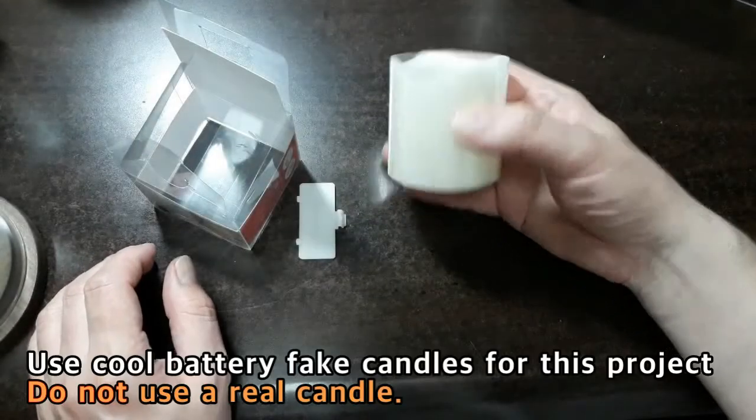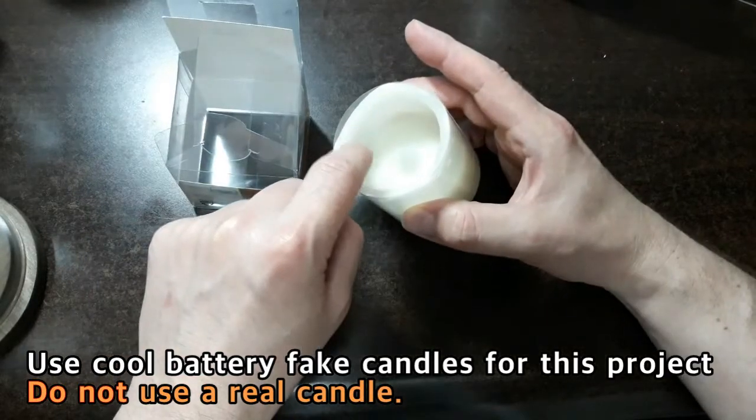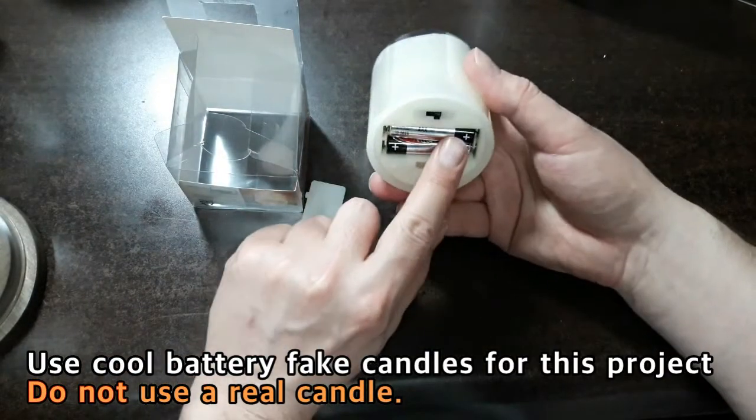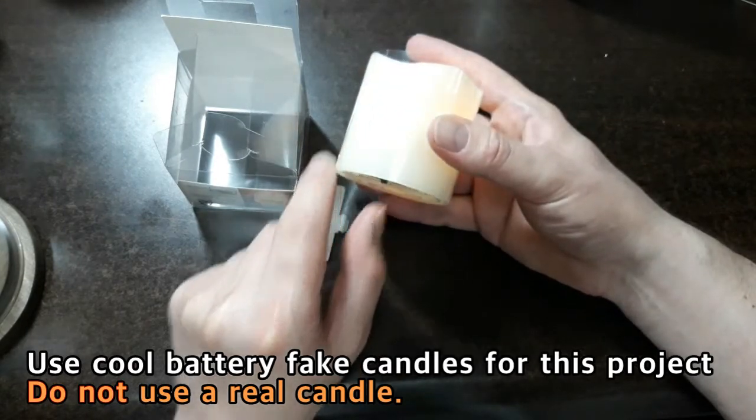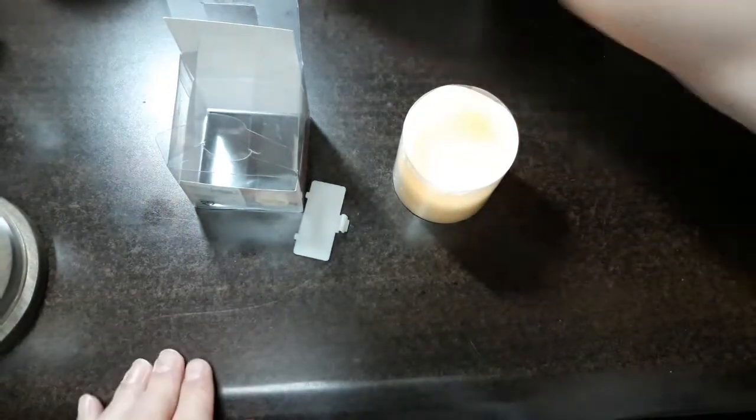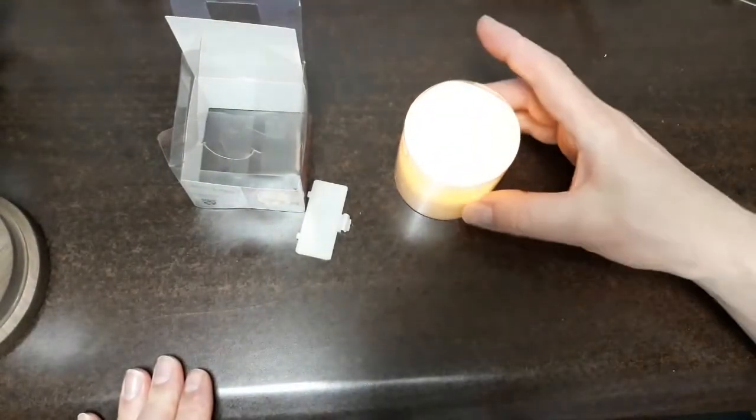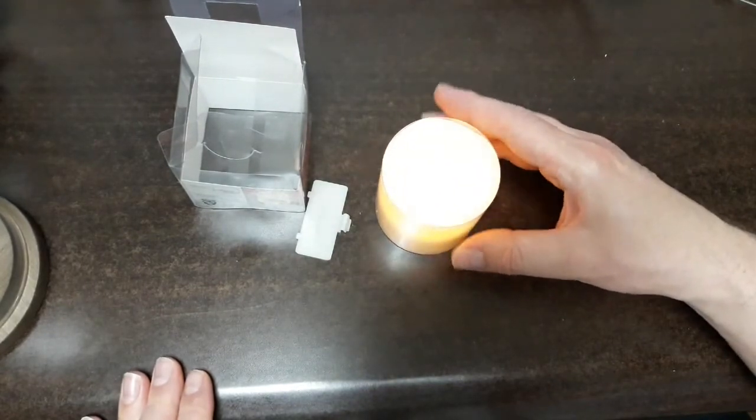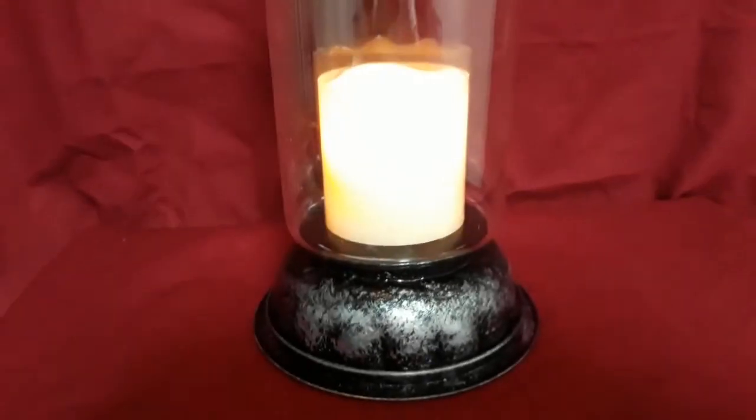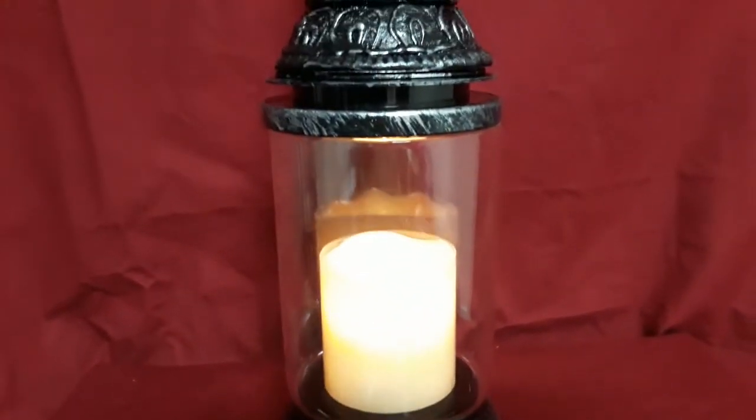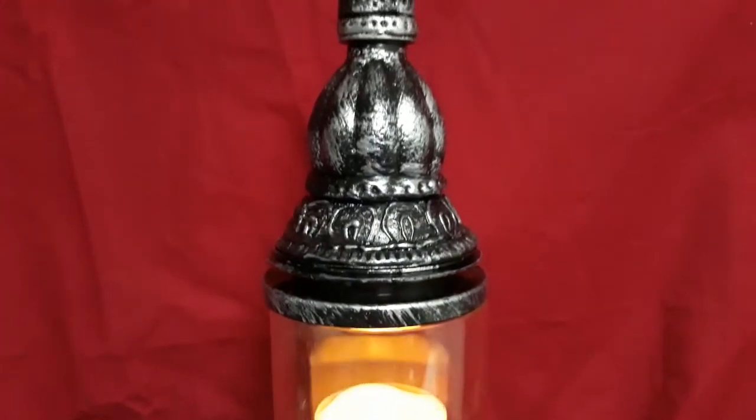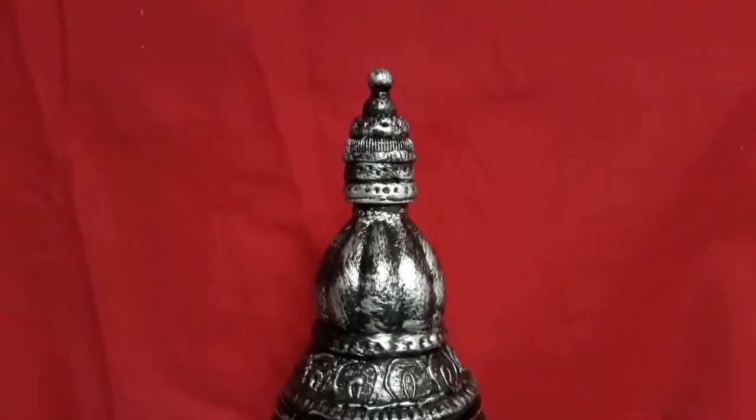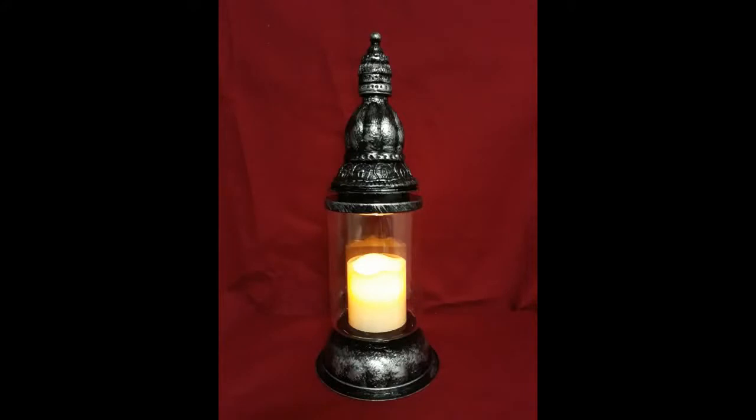So today I've got my dollar store candle. It's made of wax, believe it or not. And it has a little light down here. I'm using two AAA batteries. And look at this glow. Look at that. It is very, very realistic. We're going to put this artificial candle in our candle holder. And let's see what it looks like finished.